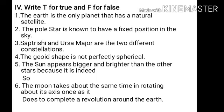Fourth one: the Earth's shape is not perfectly spherical — true. Fifth one: the Sun appears bigger and brighter than other stars because it is indeed so — false. Last one: the Moon takes about the same time rotating about its axis once as it does to complete a revolution around the Earth — true.